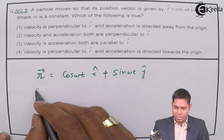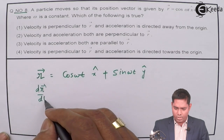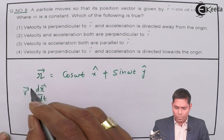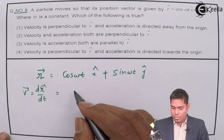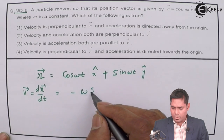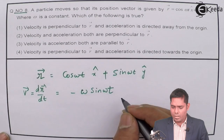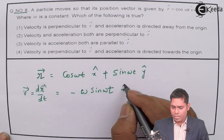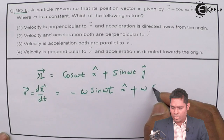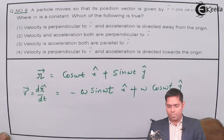If I differentiate this — dr/dt — I am getting the velocity of the particle, which is given by minus omega sin(ωt) in the x-cap direction plus omega cos(ωt) in the y-cap direction.